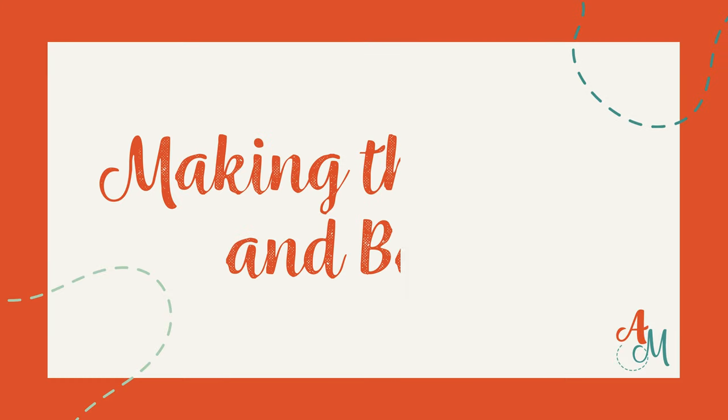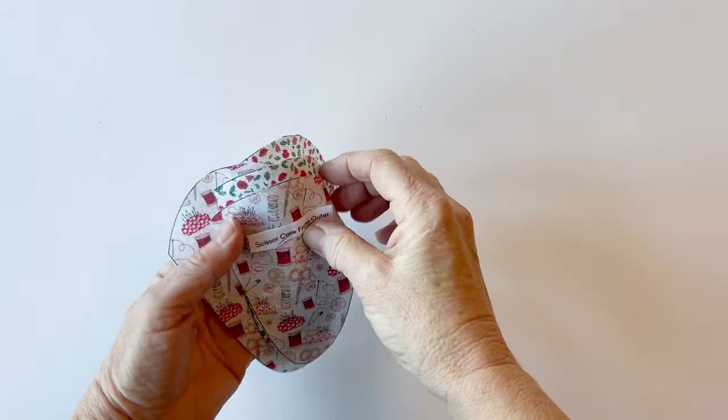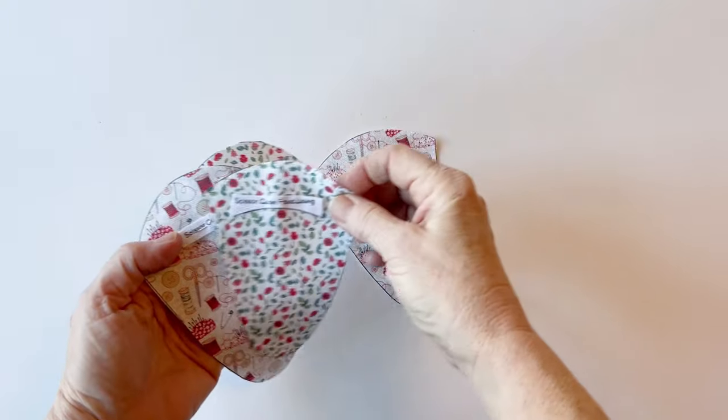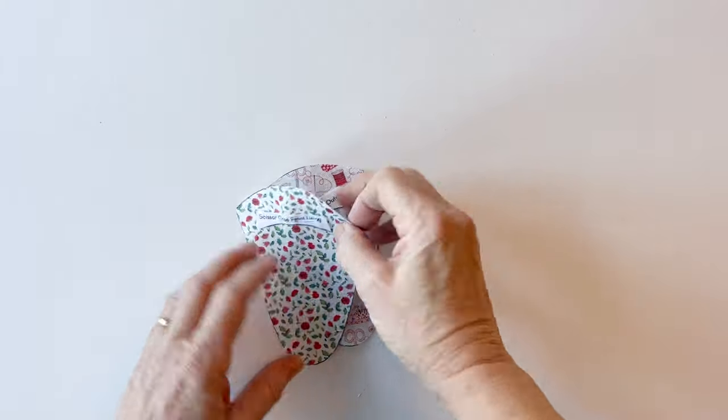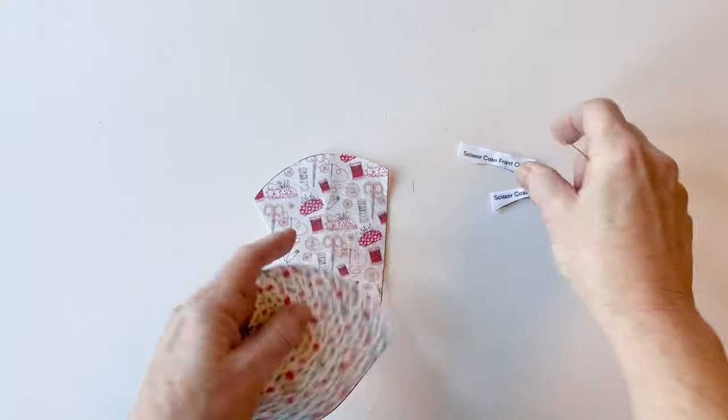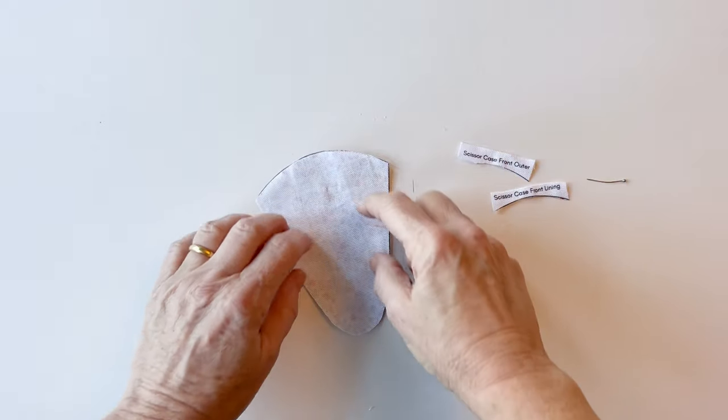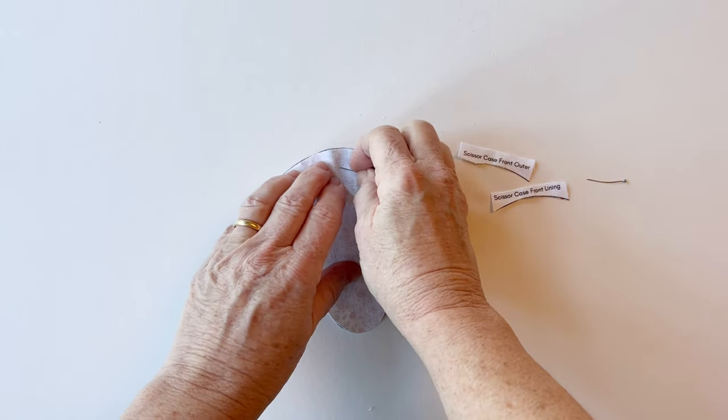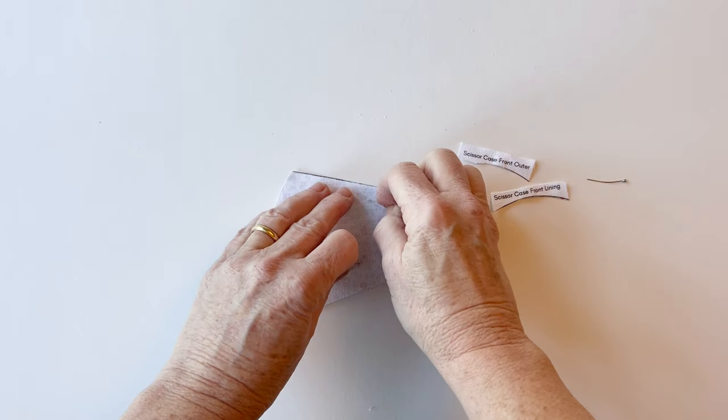We're going to start by making the front and back. Once you've cut all the pieces out from your fabric panel and labeled them, take the scissor case front outer and the scissor case front lining. Remove the labels and place them right sides facing. Make sure all the raw edges are matching up. They're printed to exactly the same size so they'll match up nicely, and then pin together all the way around.